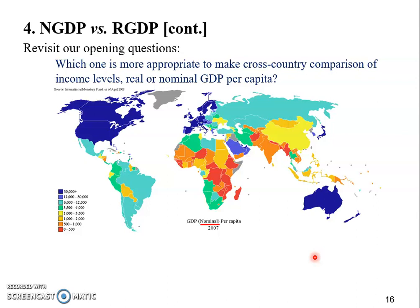On the map comparing income levels across countries, we used nominal GDP per capita — not real GDP. You're probably under the impression that real GDP is superior, since it reflects the pure change in quantities. But why do we use nominal GDP when comparing income levels across countries? I'll leave that as an assignment for you to think about, and we can discuss it in our online virtual meeting. There may be more than one answer, so try your best.